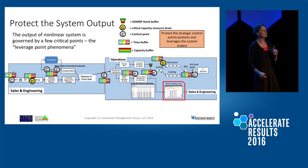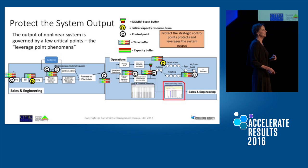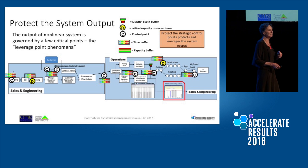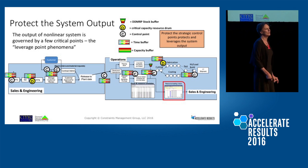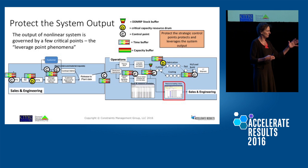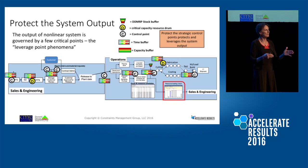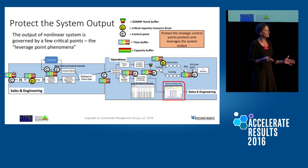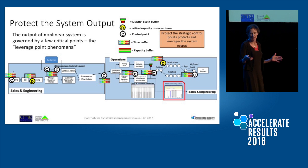Capacity buffers are also critical. A capacity buffer simply says I need sprintability — so when variation happens to me, I can recover. Time buffers and capacity buffers are interconnected. If you have lots of variation, you have a choice: if feeding resources have sprint capability, I need a smaller time buffer. The less sprint capability in a resource, the bigger the time buffer.